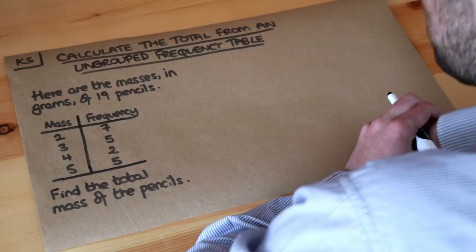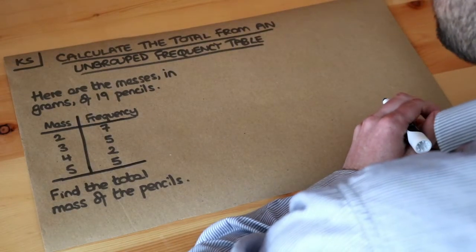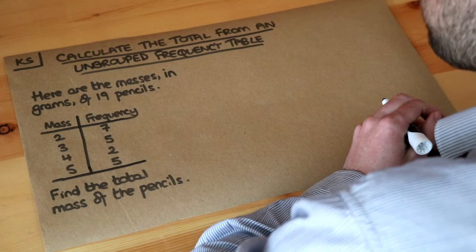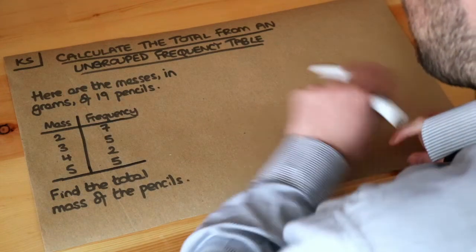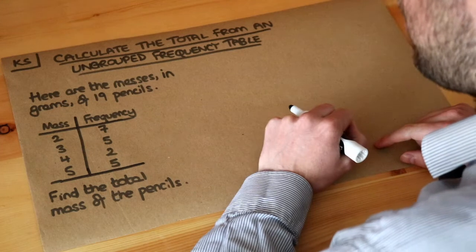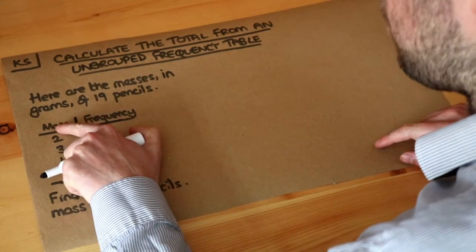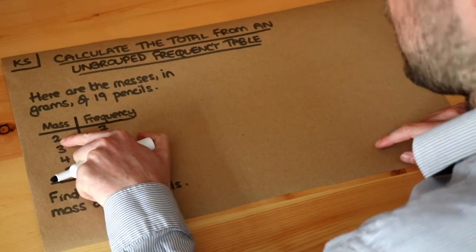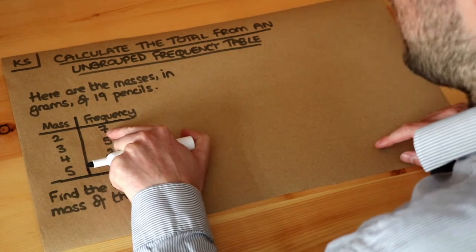Hello and welcome to this Dr. Ross mass key skill video on calculating the total from an ungrouped frequency table. We've got the masses in grams of 19 pencils. For the pencils with a mass of 2 grams — that's a very light pencil — we've got a frequency of 7.